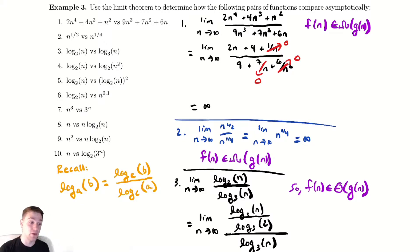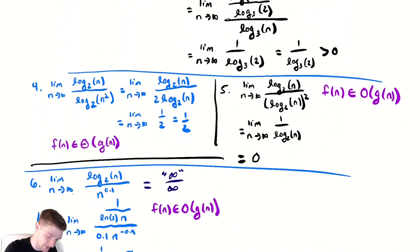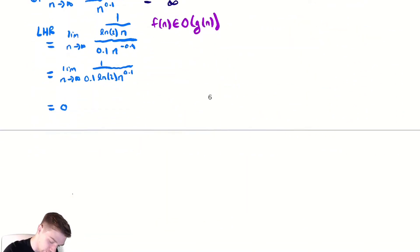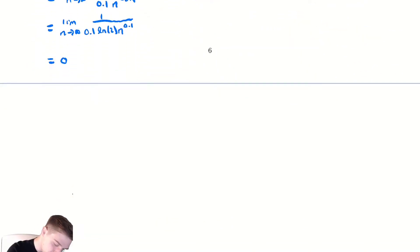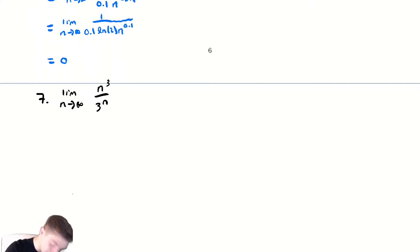For problem number seven we're going to be comparing a polynomial to a similar-looking exponential function to see which one grows faster. Specifically, we're comparing n cubed to 3 to the n.